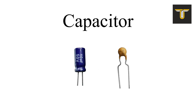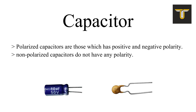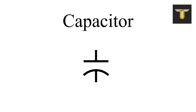Another commonly used component is the capacitor. It may be polarized or non-polarized. In this picture, the capacitor on the left side in blue is a polarized capacitor, and the other one is a non-polarized capacitor. Polarized capacitors have positive and negative polarity, whereas non-polarized capacitors do not have any polarity. The symbol of a polarized capacitor is this.